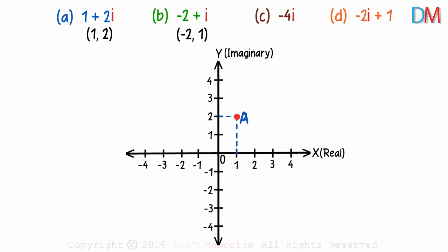Two units to the left on the real axis and one unit up on the imaginary axis. That's our second point, point B.